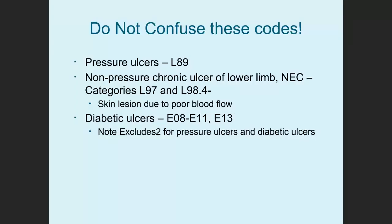If you look in the index, there are many different kinds of ulcers. Don't get pressure ulcers L89 confused with other kinds of skin ulcers. There are non-pressure chronic ulcers of the lower limb, L97 and L98.4, which are due to poor circulation. There are also diabetic ulcers, E08 to E11 and E13. Note that the excludes two note means diabetic ulcers and pressure ulcers can be coded together, but a diabetic ulcer is not the same as a pressure ulcer — be careful to keep these differentiated.